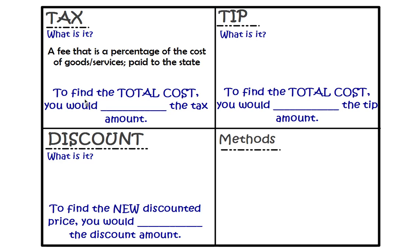This tax dollar amount is sent to the state, and that's the funds they use for schools, road work, and a lot of other things. This taxable fee is a percentage of whatever it is you buy, and it's added to your cost of your purchase. So to find the total cost, you would have to add the tax amount because it increases the price. Now, groceries are not taxable. When you go to the grocery store and buy food, food items are not taxable. But if you go out to eat or go to McDonald's, that is taxable because there is a service performed as well.